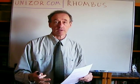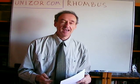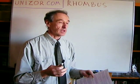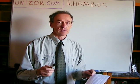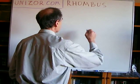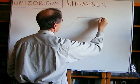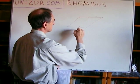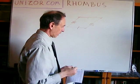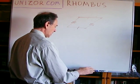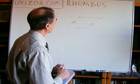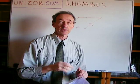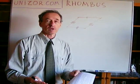Rhombus is basically a kind of parallelogram, which I have actually talked about in the previous lecture. What kind of parallelogram is it? Well, the one which has all sides congruent to each other. Generally speaking, the opposite sides are congruent to each other — that's the general parallelogram. The one we are talking about is the one which has all four sides equal to each other. So that's the definition of the rhombus.